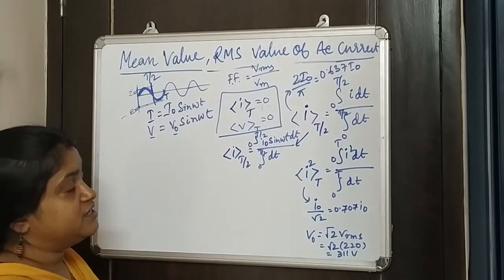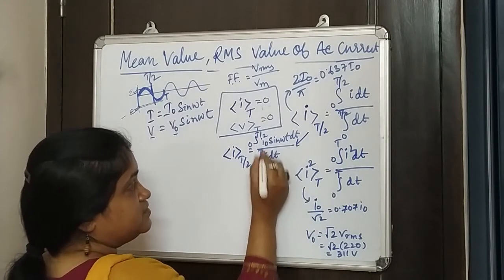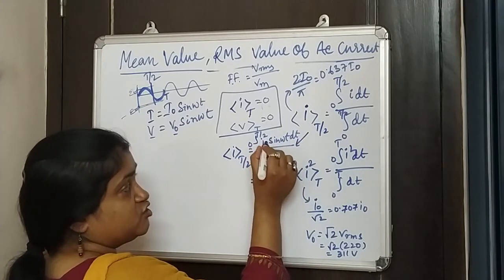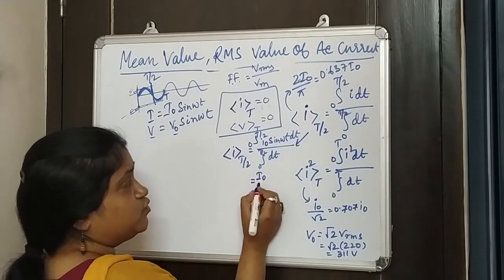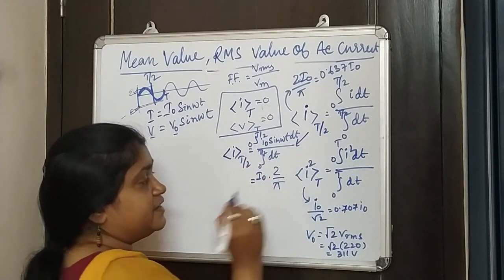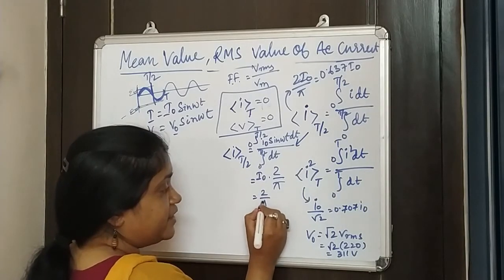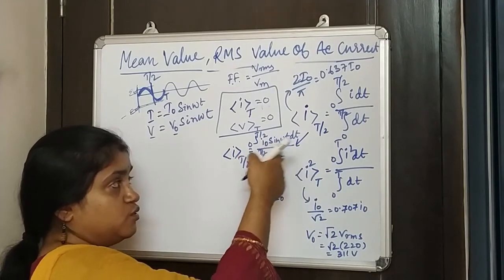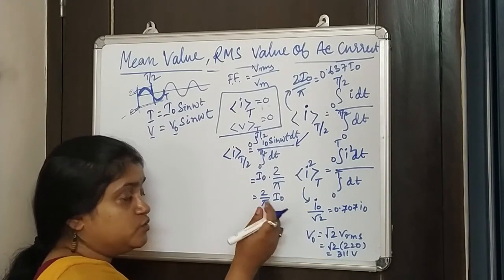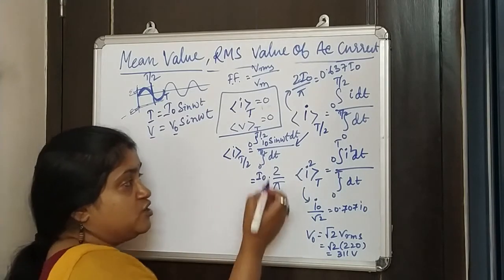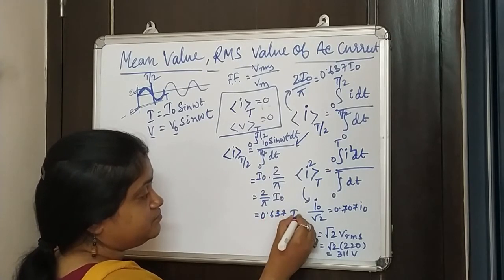Since I₀ is constant, it comes out of the integral. The integral of sin(ωt) from 0 to T/2 divided by the time interval gives us 2/π. So the average or mean current over the half cycle is (2/π) × I₀. Substituting numerically, this gives 0.637 × I₀.